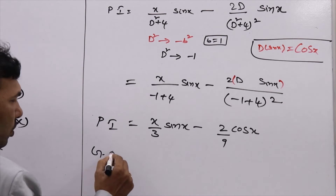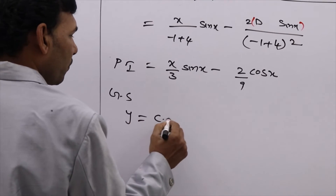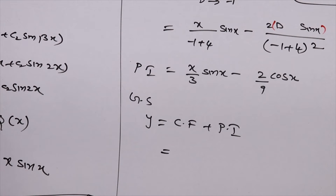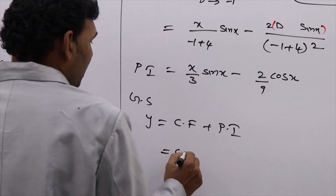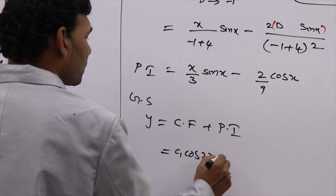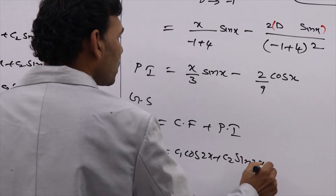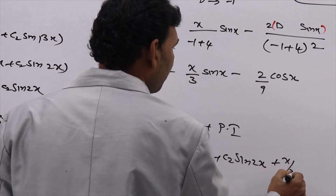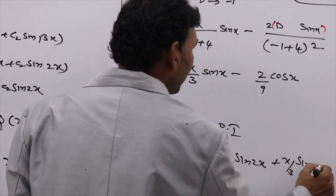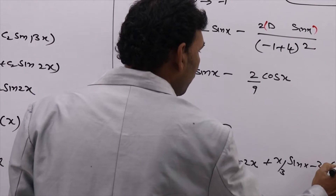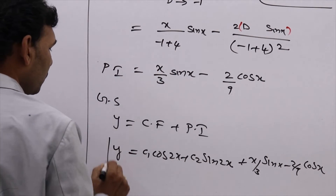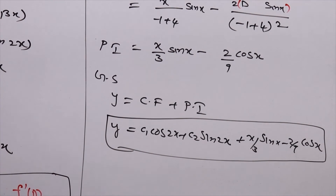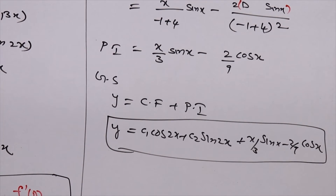Next, we need to write the general solution: y = CF + PI. The complementary function is c₁·cos(2x) + c₂·sin(2x). The particular integral is x/3 · sin(x) minus 2/9 · cos(x). So the general solution is y = c₁·cos(2x) + c₂·sin(2x) + x/3·sin(x) − 2/9·cos(x).